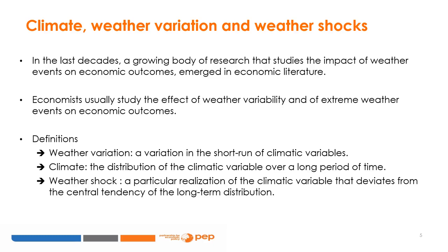Some definitions are useful here. In the economic literature, the term weather variation is used to indicate variation in the short run of climatic variables, while the term climate is used to describe the distribution of climatic variables over a longer period of time — for example, the range of annual precipitation realized in Madagascar over a century. The term weather shock is widely used in economic literature. We can define a weather shock for a given spatial entity and time frame as a particular realization of the weather variable that deviates from the central tendency of the long-term distribution.